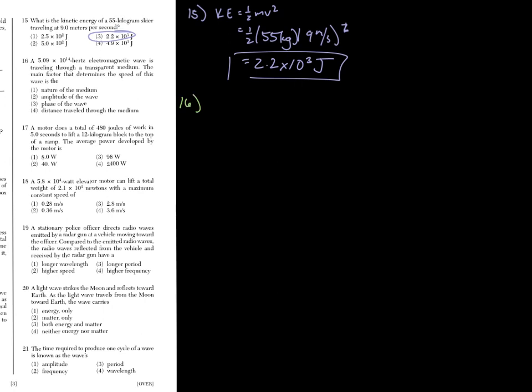Number 16. We have that many hertz frequency of a wave traveling through a transparent medium. The main factor that determines the speed of the wave is always the nature of the medium. So light, sound, any kind of wave, they change their speed depending on the material they're traveling through. Light travels fastest through air. Sound travels fastest through solids. If you change the material they're going through, it's going to change its speed. It's always that.